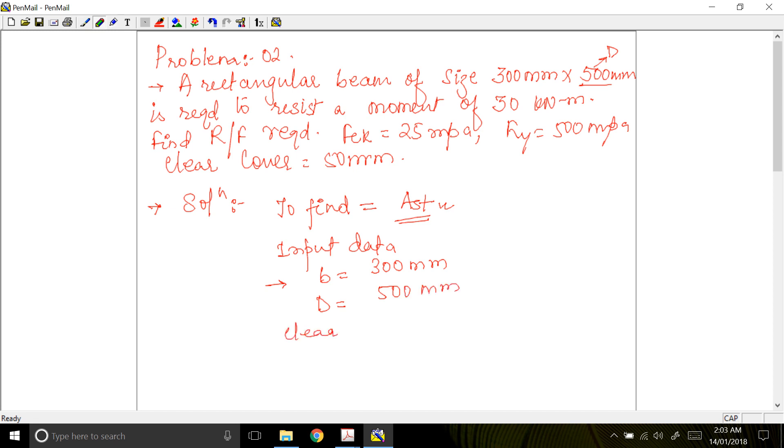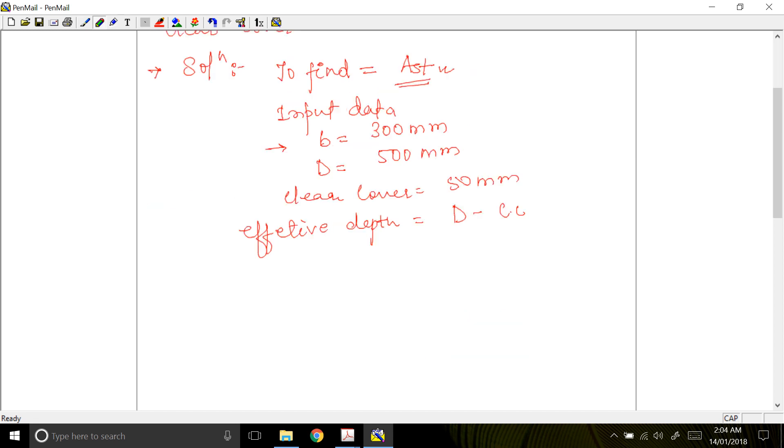The effective depth is equal to your D minus clear cover, I will call this as clear cover CC, which is equal to 500 minus 50, that is 450 mm. So now we have our effective depth.